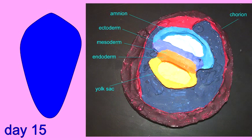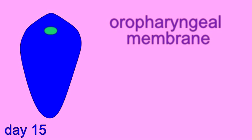As the migration and differentiation of cells that occurs during gastrulation ensues in the third week of development, starting around day 15, two depressions form on the dorsal side of the embryo — the oropharyngeal membrane, which will be the future site of the mouth,